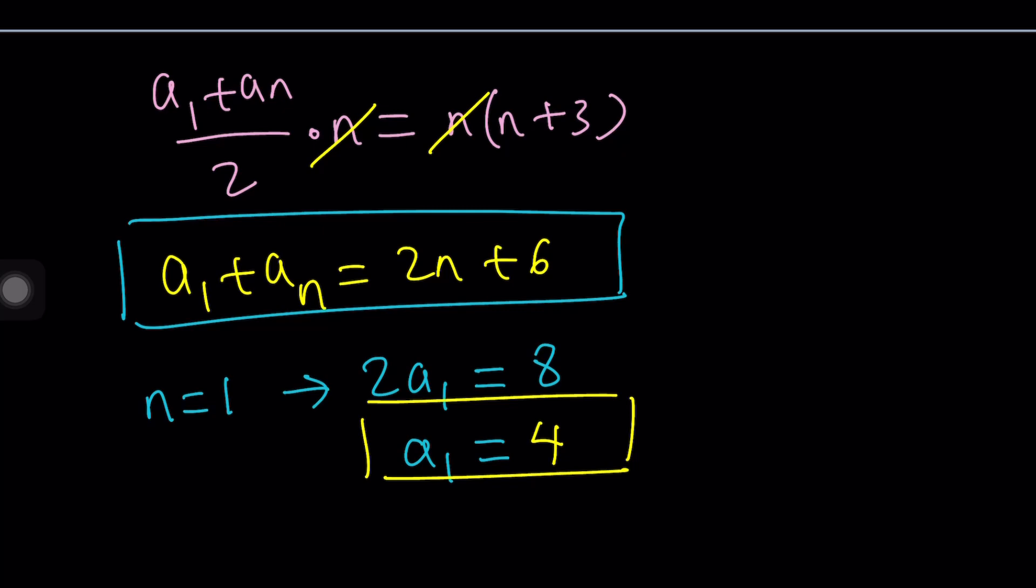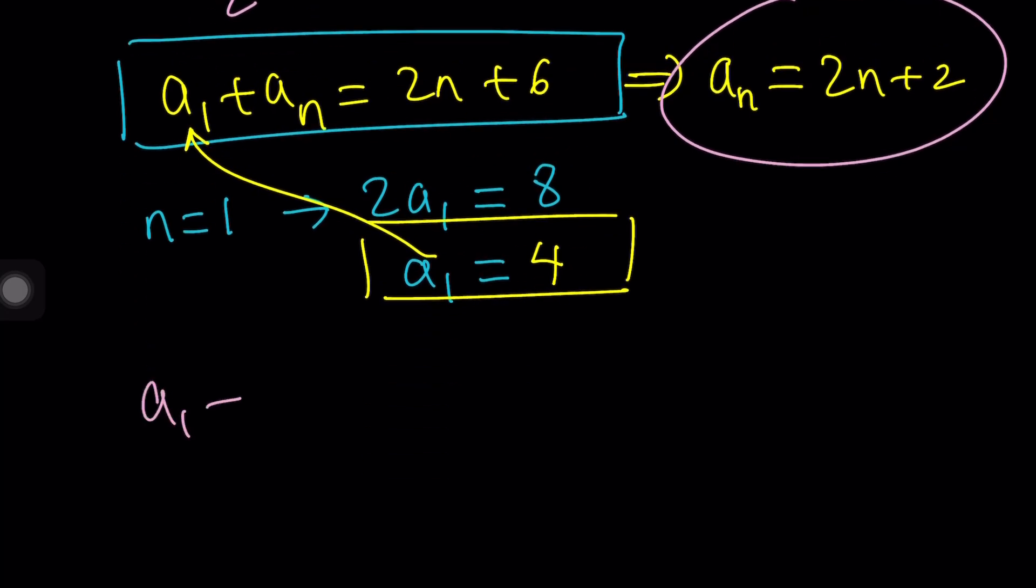Now, you can go ahead and plug it in here, and that's going to give you a sub n equals 2n plus 6 minus 4, 2n plus 2. So that will be the general term, and that will be the answer. But obviously, this is not the only way to approach this problem. We can also approach it a little differently.